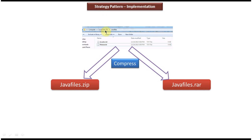In D drive, I have a Java files folder, and in that Java files folder there are multiple files. My requirement is I have to compress this Java files folder and send the compressed file to the client. For that particular requirement, I have two solutions. One is I can compress as a zip file and send the zip file to the client, or I can compress as a RAR file and send the RAR file to the client. So there are two solutions for the particular problem.